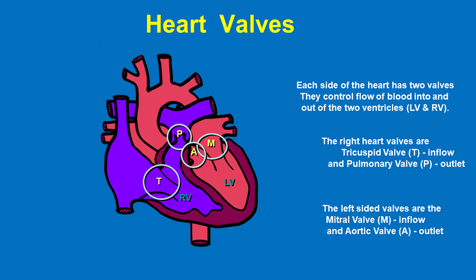The function of the heart valves is to maintain blood flow through the heart, keeping blood moving efficiently in one direction. There are four valves in the heart, as shown here in this illustration.